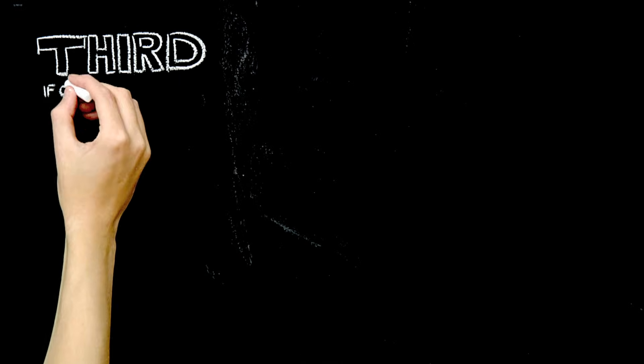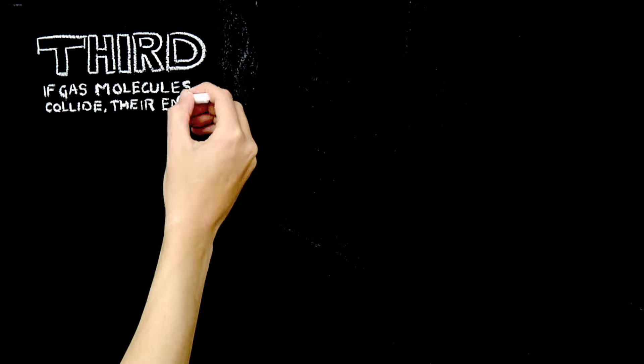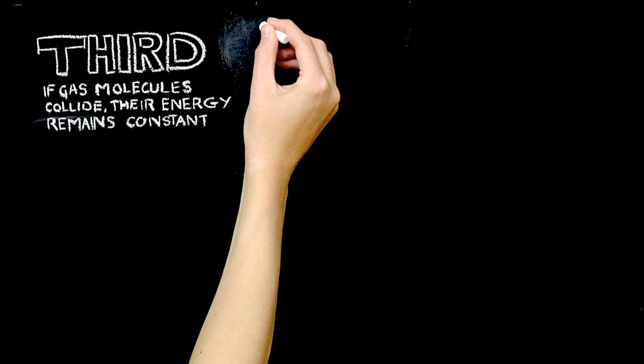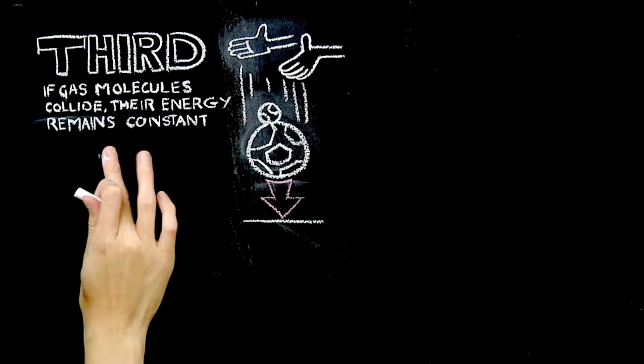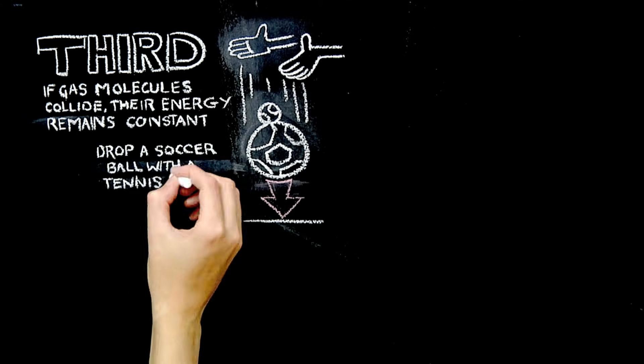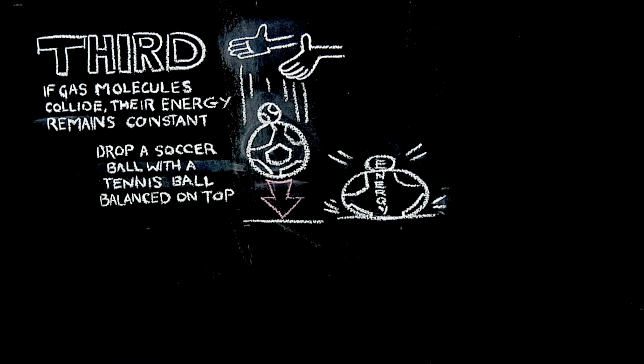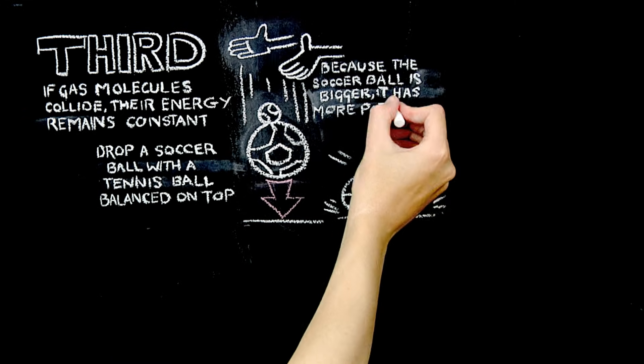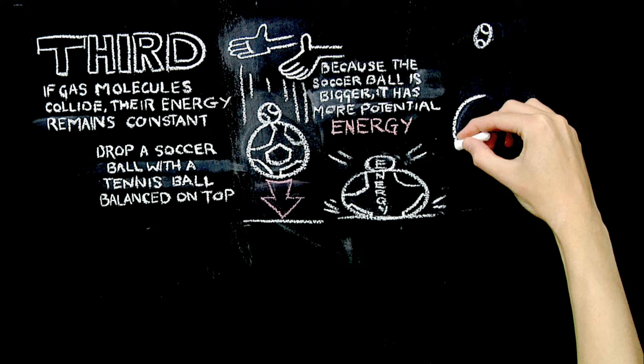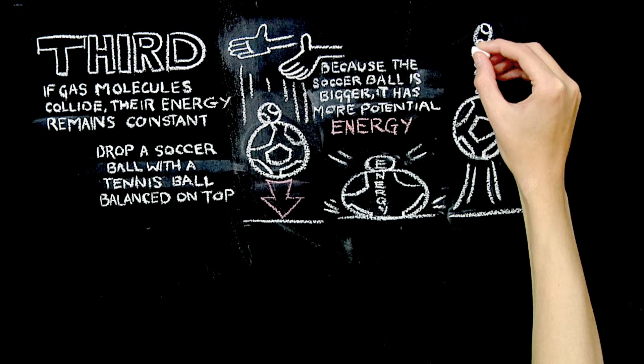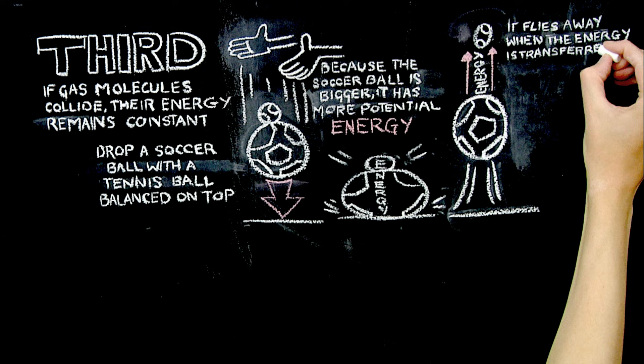Third, if gas molecules collide, and they do, remember these are assumptions, their energy remains constant. An easy way to demonstrate this is by dropping a soccer ball with a tennis ball balanced on top. Because the soccer ball is bigger, it has more potential energy, and the energy from the larger ball is transferred to the smaller tennis ball, and it flies away when that energy is transferred.